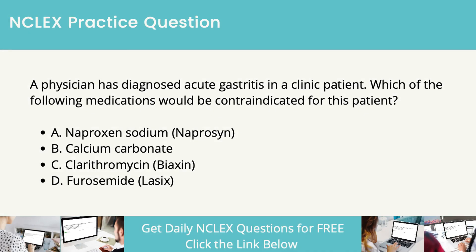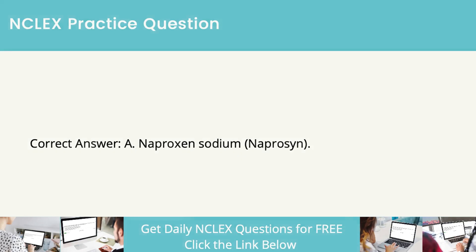A physician has diagnosed acute gastritis in a clinic patient. Which of the following medications would be contraindicated for this patient? Naproxen sodium (naproxen). Calcium carbonate. Clarithromycin (Biaxin). Furosemide (Lasix). The correct answer is naproxen sodium, naproxen.